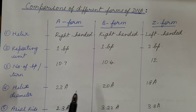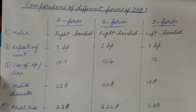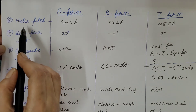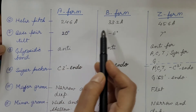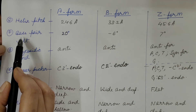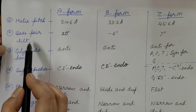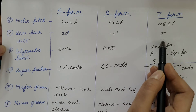The axial rise, that is distance between two base pairs: A-form is 2.3 Å, B-form is 3.32 Å, and Z-form is 3.8 Å. Helix pitch, the length of one helical turn: A-form is 24.6 Å, B-form is 33.2 Å, and Z-form is 45.6 Å. Base pair tilt, the angle that the plane of the base pair forms with the helical axis: A-form is 20°, B-form is −6°, and Z-form is 7°.